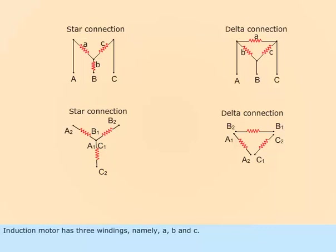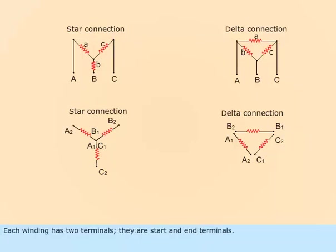An induction motor has three windings, namely A, B, and C. Each winding has two terminals — they are the start terminal and the end terminal.